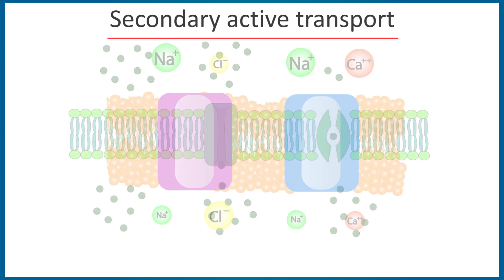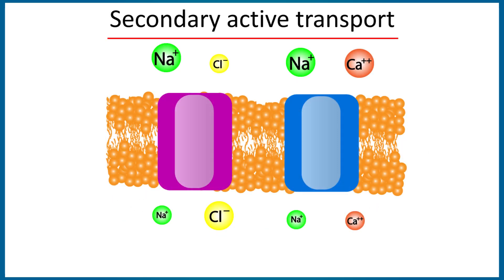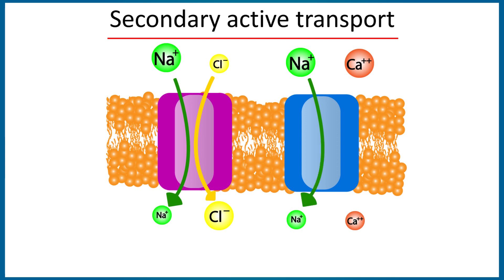While in the secondary active transport, energy is not liberated directly from the ATP molecule. Instead, one ion moves down the concentration gradient and the energy from that movement is used to transport a second ion, either in the same direction — which is called co-transport — or in the opposite direction — which is called counter transport.